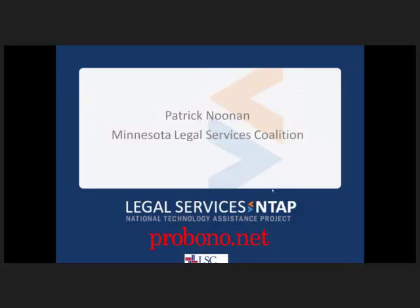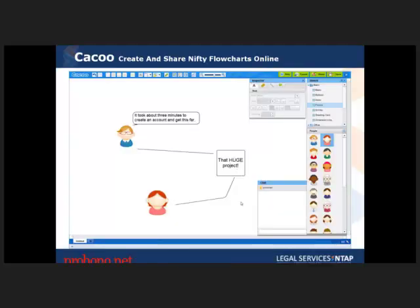I'm going to turn this over to Patrick who's going to run us through our first tips. My name is Patrick Noonan from the Minnesota Legal Services Coalition. The first tool is called Kaku — an online flowchart and diagram creator. You can use pictures, boxes, arrows, and share diagrams with others, collaborating in real time. You can chat live and export in formats like PNG and PDF. It's much easier than Microsoft Word's diagram tool.